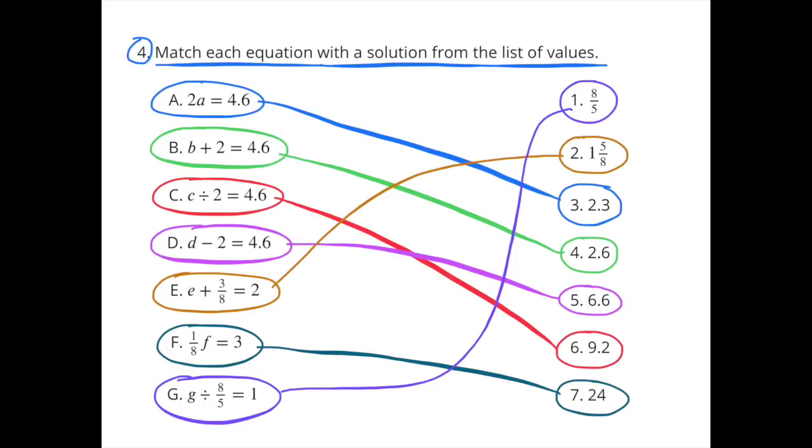C, C divided by 2 equals 4 and 6 tenths. D, D minus 2 equals 4 and 6 tenths. E, E plus 3 eighths equals 2. I match that up with number 2, because 1 and 5 eighths plus 3 eighths equals 2.